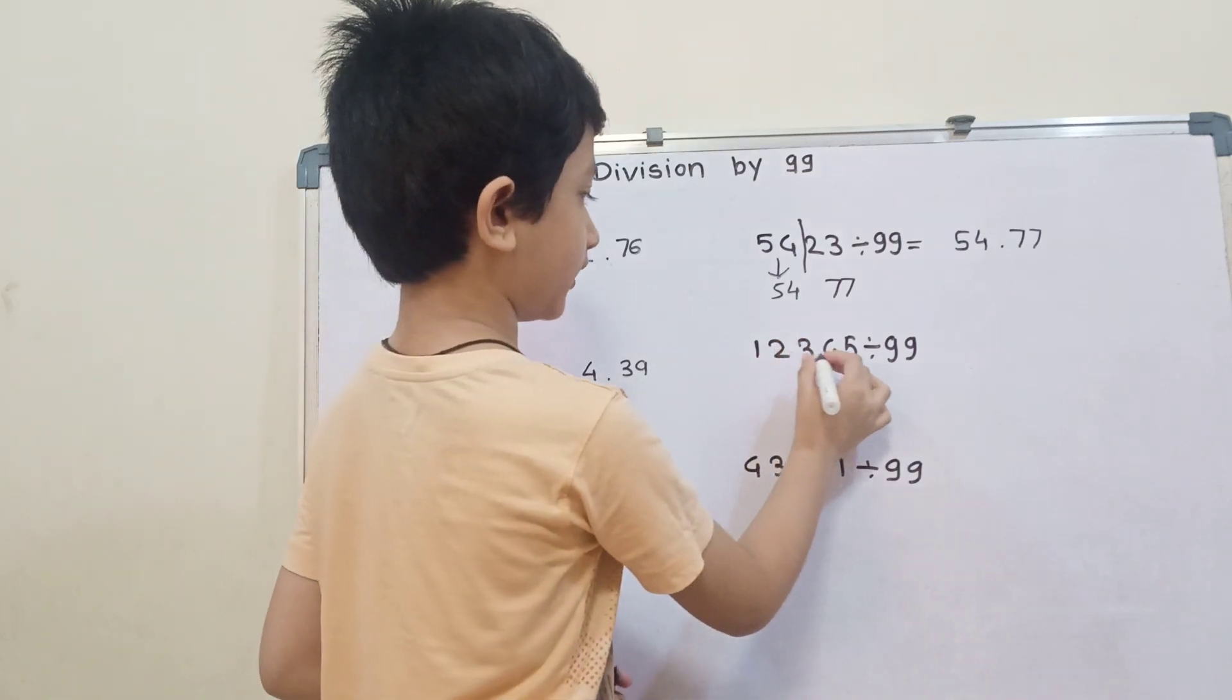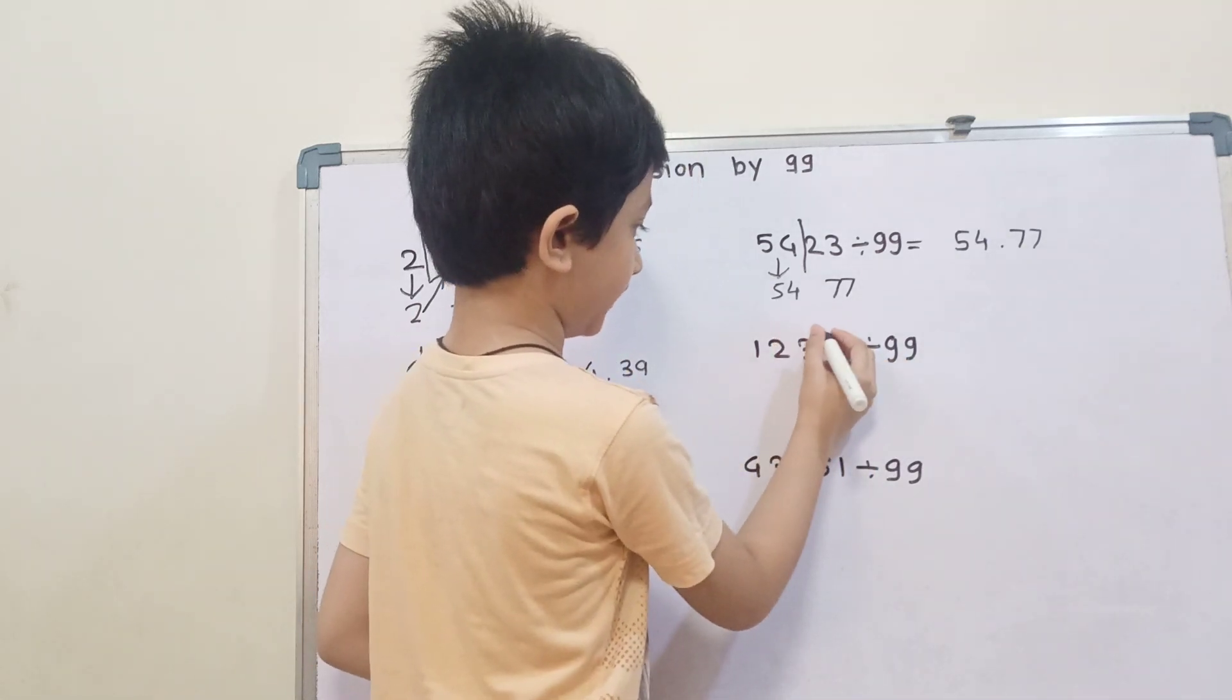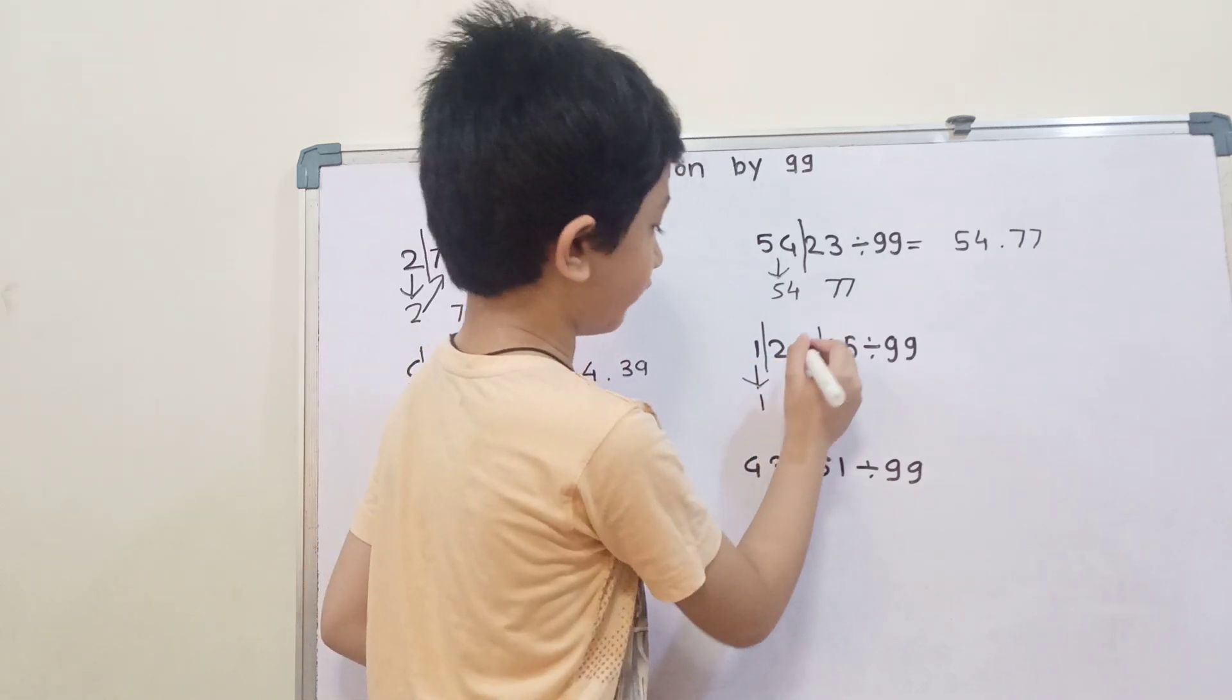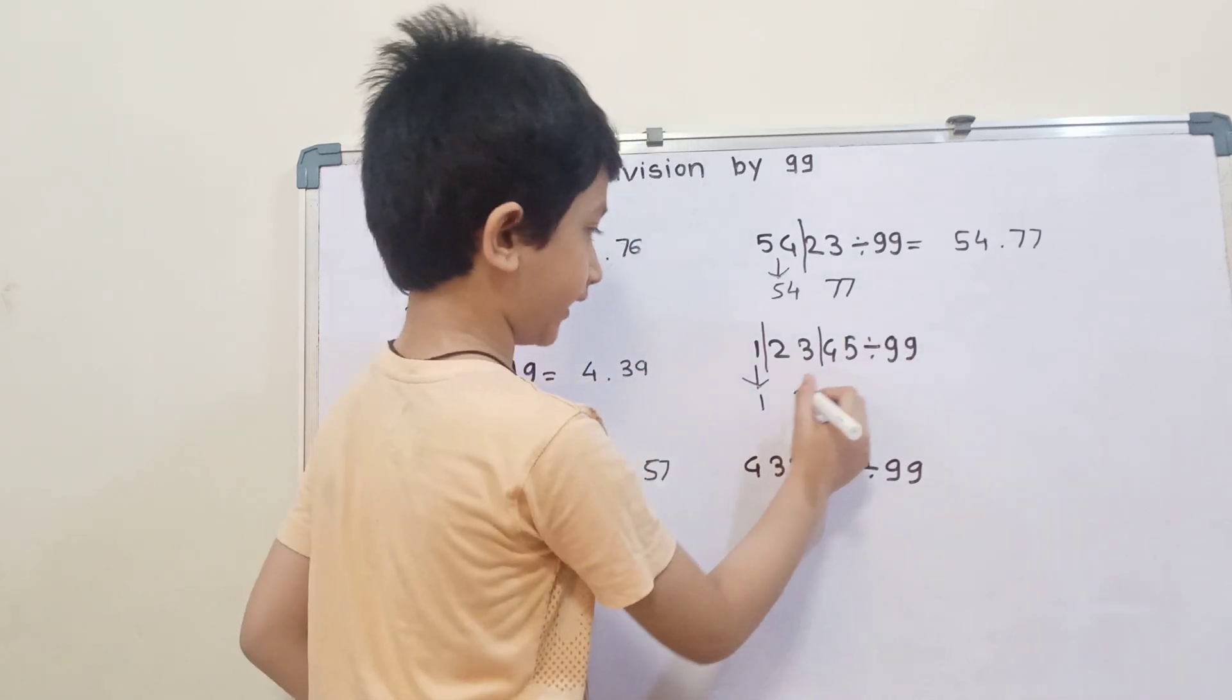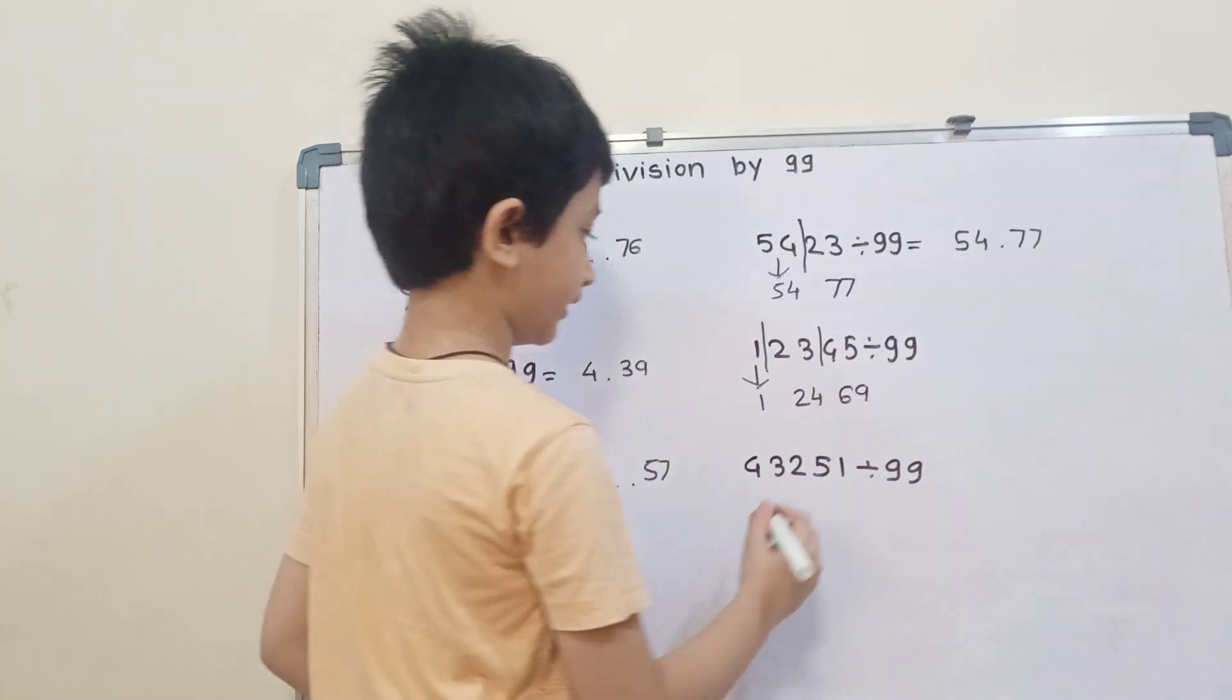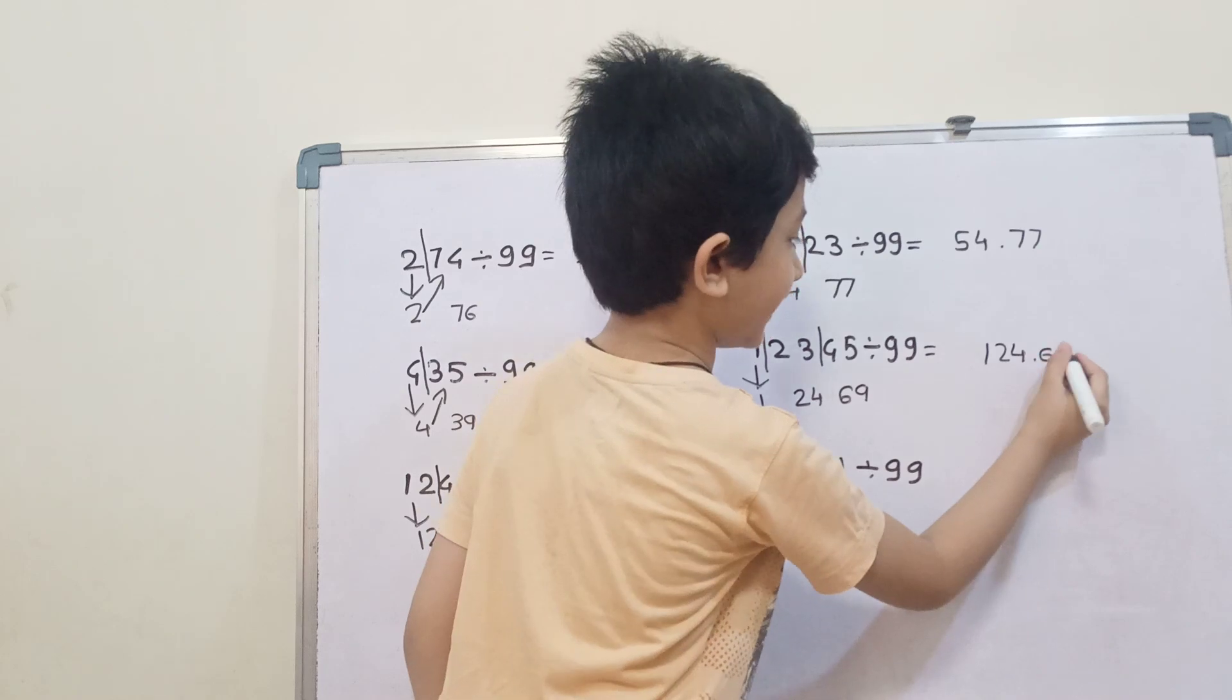Then 12345 divided by 99. First, divide into 2-digit parts. Write 1 as it is, then 23 plus 1 is 24, and 24 plus 45. So 5 plus 4 is 9, and 4 plus 2 is 6. The answer is 124.69.